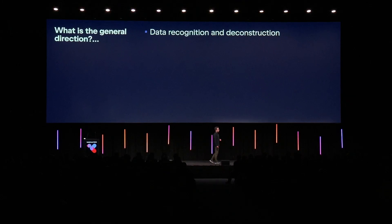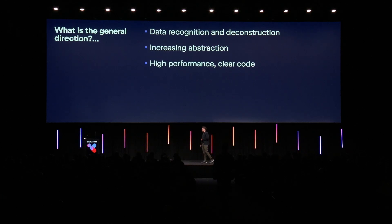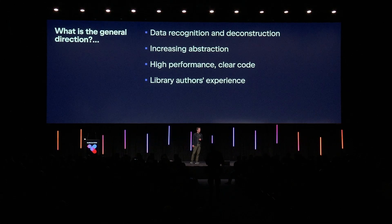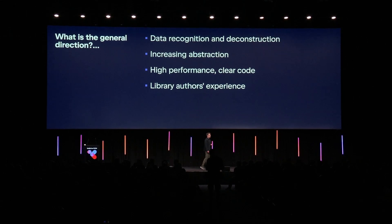These features contribute to broader focus areas we find important, such as data recognition and deconstructions with improvements to our powerful data flow framework and data classes, increasing abstractions with such features as context parameters and explicit backing fields, high-performant and clear code with value classes and adaptability, and of course, library author experience with improvements to opt-in mechanics and signature management. We'll be discussing these features in detail in my talk dedicated to language features.